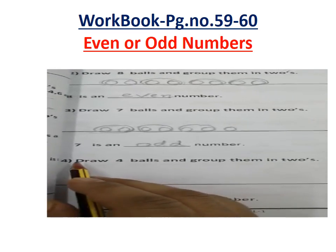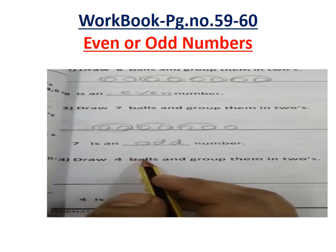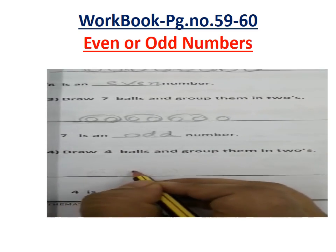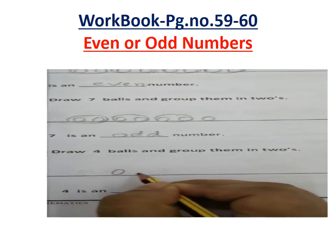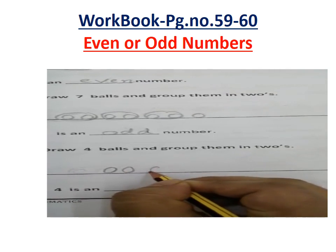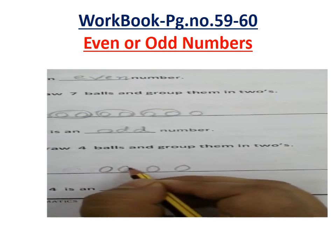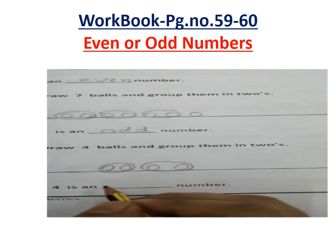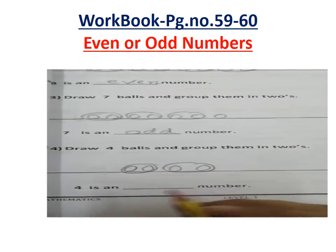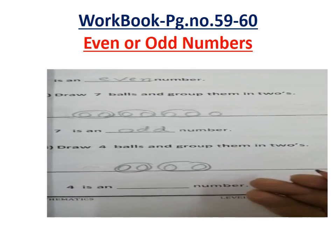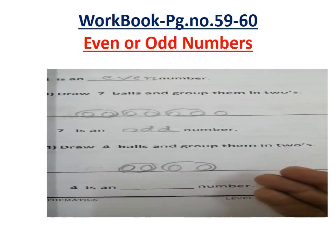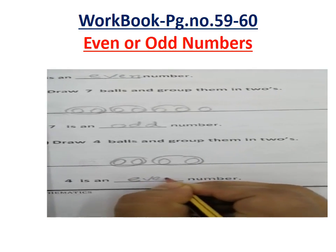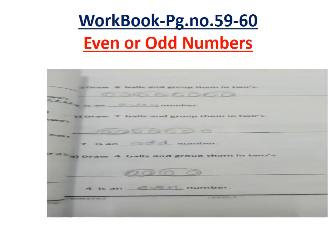Last one, question number 4: draw 4 balls and group them in twos. How many balls? 4. Drawing: 1, 2, 3, 4. I will group these balls into twos. So 4 is which number — even or odd? No ball is left, so that means 4 is an even number. Very good, students! Excellent.